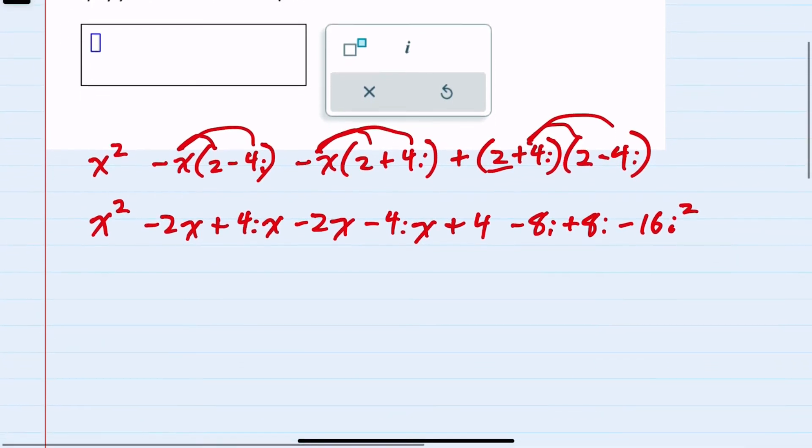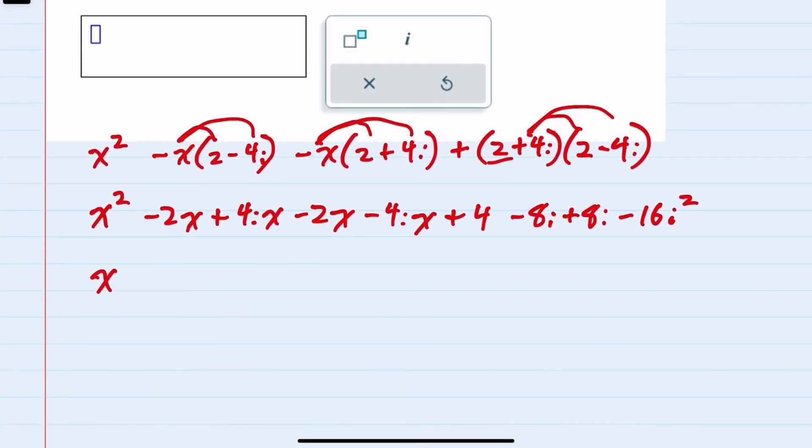Continuing to simplify, I still have the x squared term, but I do have some like terms that I can combine. So the negative 2x and the negative 2x combine to be a negative 4x. The plus 4ix and the minus 4ix, those are going to cancel.